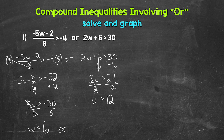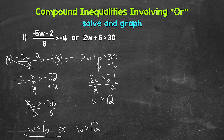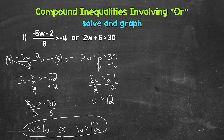So w is greater than 12. Now we have both inequalities solved, and we can write this as a compound inequality: w is less than 6 or w is greater than 12. So w can be anything less than 6 or greater than 12 — any number in those ranges is a solution and will make the compound inequality true.